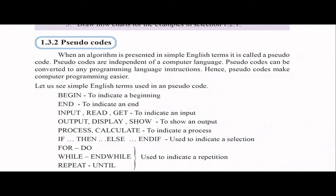Hi children, welcome to Dictate Learning. This is the third part of chapter one of grade 11, the Programming chapter. If you haven't watched my previous videos, I have done separate videos from grade six onwards. But if you want to start with grade 11, you can directly go to the grade 11 playlist. In the first part I discussed how to analyze a problem, and in the second part I discussed control structures and flowcharts.